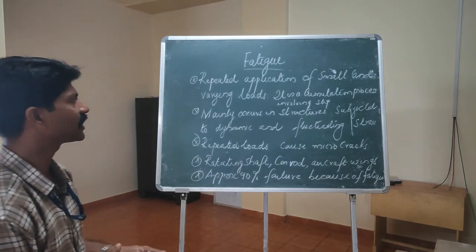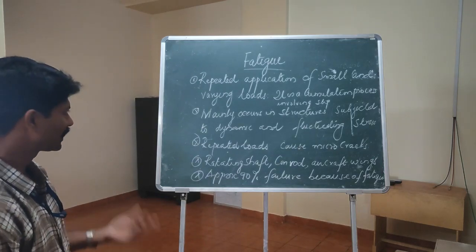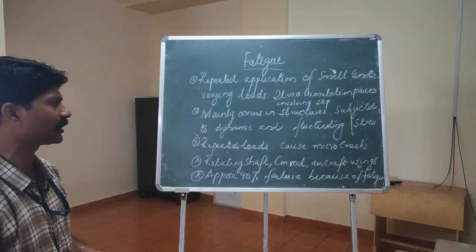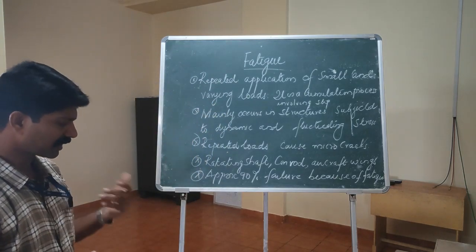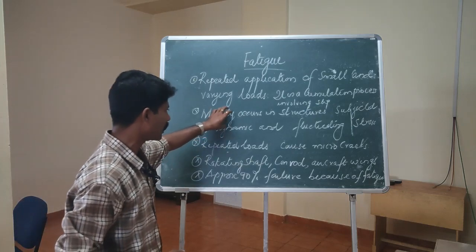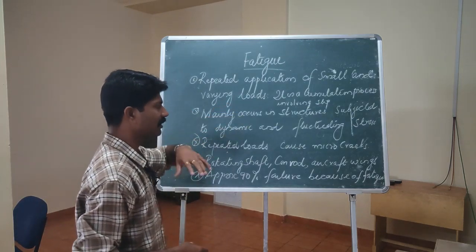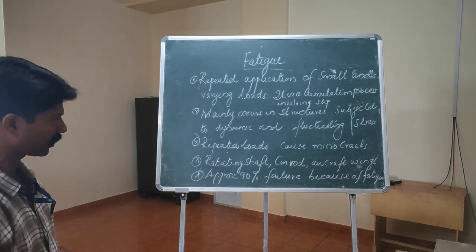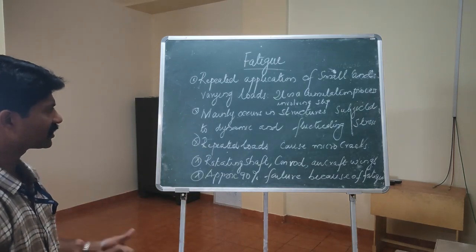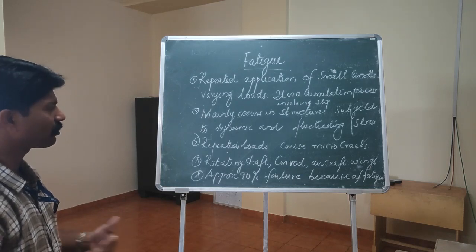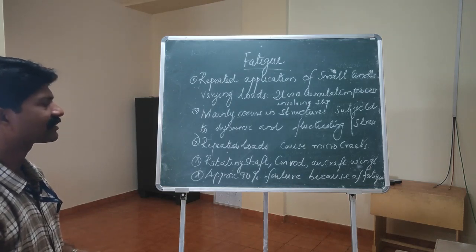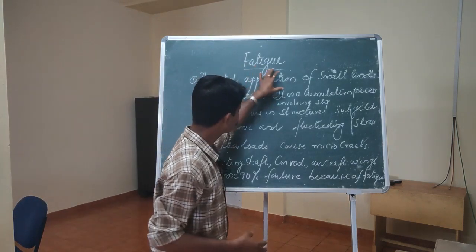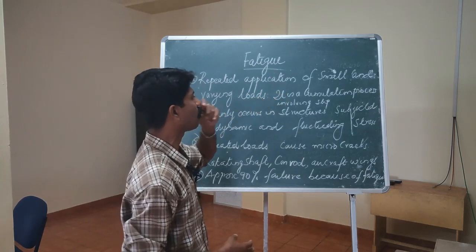Fatigue is a resultant of an accumulation process involving slip. This mainly affects structures subjected to dynamic and fluctuating stresses. Dynamic and fluctuating stresses act on all components. A good example is the IC engine, because it is subjected to fluctuating and dynamic loads most of the time based on acceleration and deceleration. Fatigue is a repeated application of small loads.